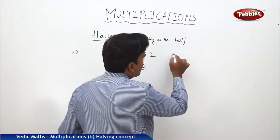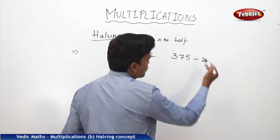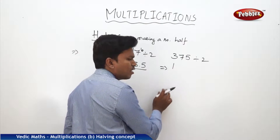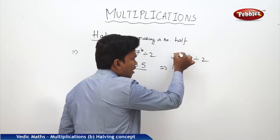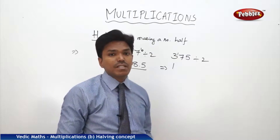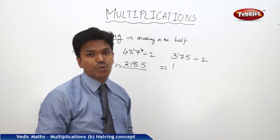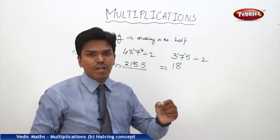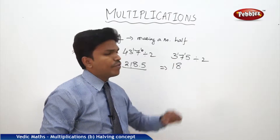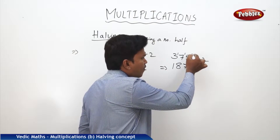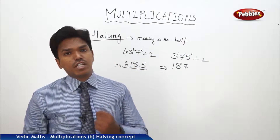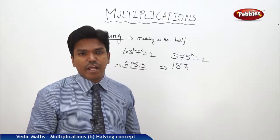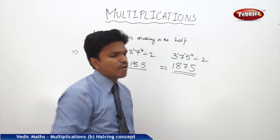One more example: 375 by 2. For 3: 2 goes 1 time, 2 ones are 2, remainder 1. Put that remainder 1 before the next digit — now it's 17. 2 goes 8 times (16), remainder 1. Put 1 before 5 — now it's 15. 2 goes 7 times (14), remainder 1. For decimal answer, put a decimal point, add a 0 making 10, 2 goes 5 times. Answer: 187.5.